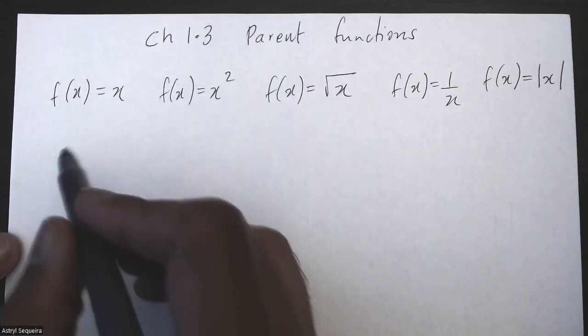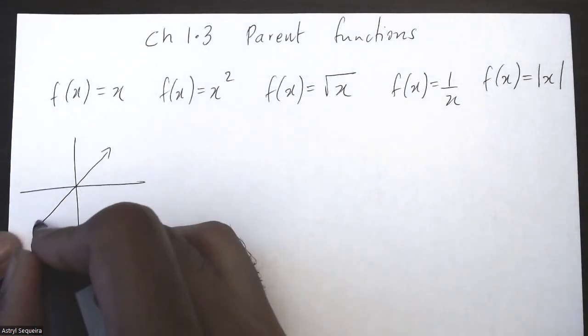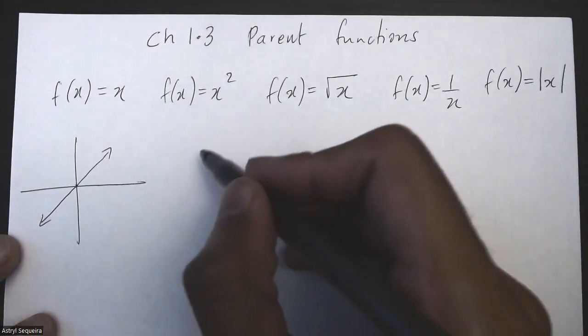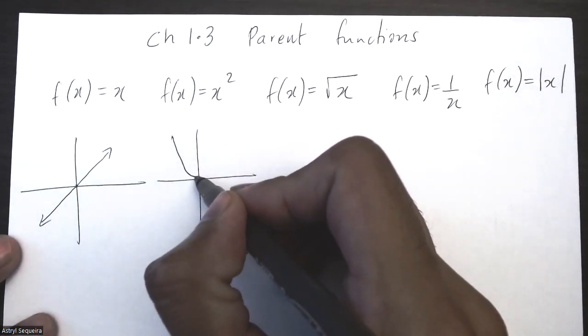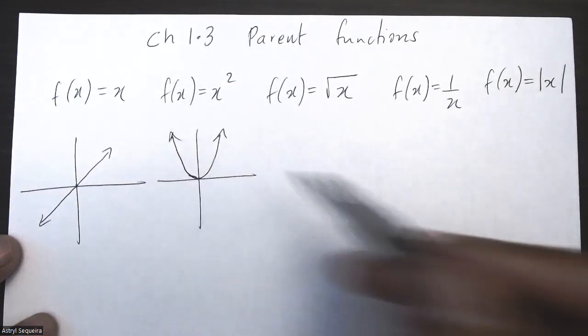So the linear function, as you probably know, the basic one just looks like that. It has a slope of positive one, y-intercept of zero, and just looks like that. A basic x-square function, quadratic, just looks like that again, x and y-intercept of zero.